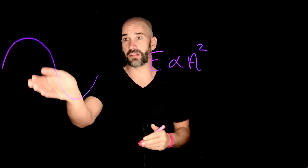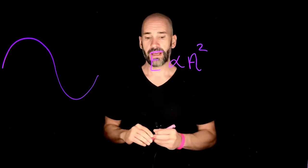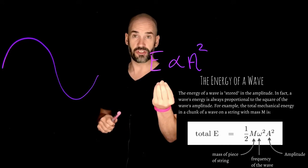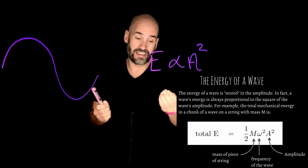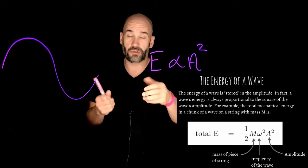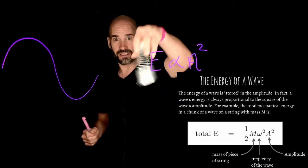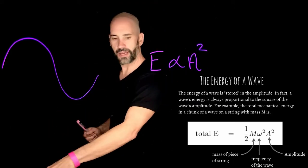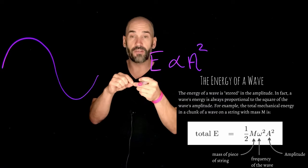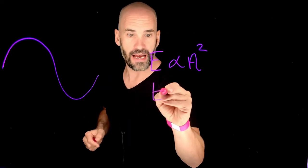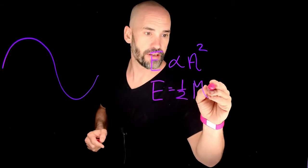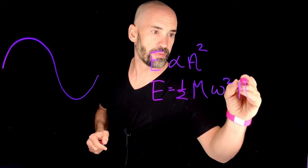This is true for all kinds of waves, whether it's a transverse wave or a longitudinal wave. As shown in the slide here, the mechanical energy — because remember this is a kinetic energy because the wave is moving — you have actual molecules of say a rope or a piece of string moving up and down, or a slinky for example. For the total mechanical energy in a chunk of a wave on a string, the energy would actually be equal to one half times the mass of that piece of string times its frequency times the amplitude squared.